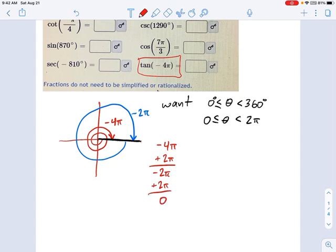That is on the unit circle, 0 radians. So I'm going to say, tangent of negative 4π equals tangent of 0π. There are coterminal angles. And tangent of 0π is just 0, so we have our answer right there.